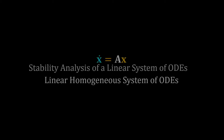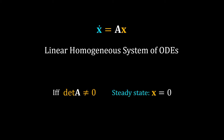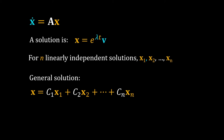In the last video we learned two key concepts of a linear homogeneous system of ODEs: first, its steady state, and second, its general solution. We learned that if the determinant of the coefficient matrix is not equal to zero, then it has only one steady state at zero. The solution of such a system is given by the eigenvalues and eigenvectors of the coefficient matrix. One solution will be x equal to e to the power lambda t into v, where lambda is the eigenvalue and v is the corresponding eigenvector.